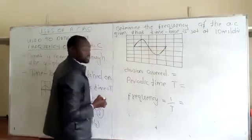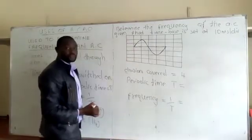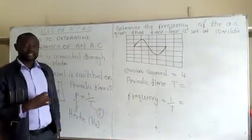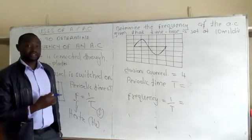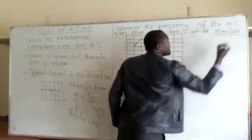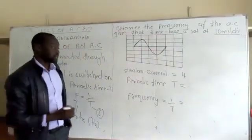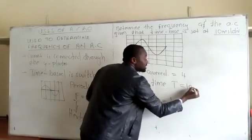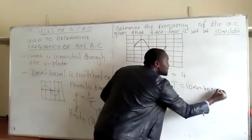...four divisions. Therefore the divisions covered are four. So what time has it taken to cover that one wave? The time base is set at 10 milliseconds per division, and therefore our periodic time will be 10 times 4, which will be 40 milliseconds.